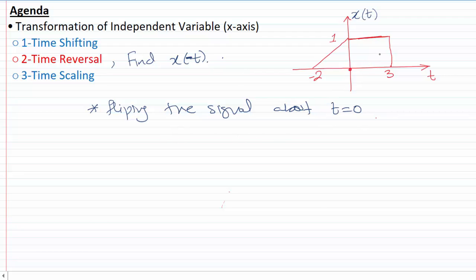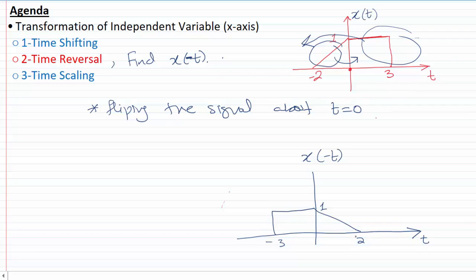this whole part is going to come on this side of the original line, and this part is going to get on that side. So for X(-t), we are going to get this plot. It's going to be zero and minus three, and it's going to remain one. So that's X(-t) for this X(t).